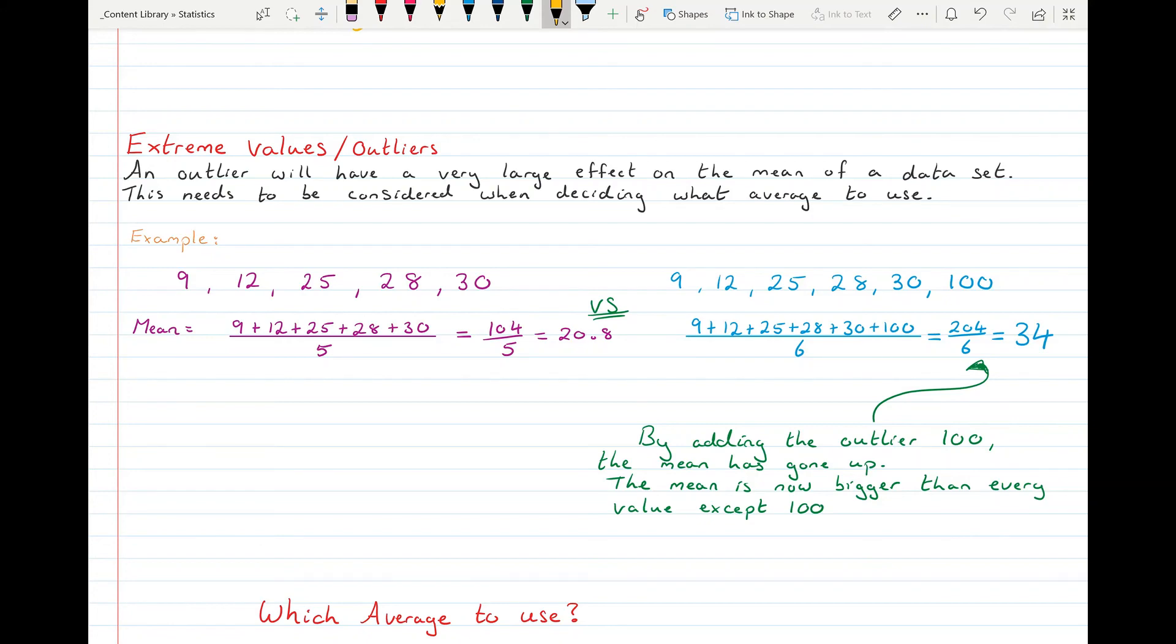And that's after changing the average from 20.8 up to 34, which is quite a big change in the average. And if you look at that, if 34 is the average of the blue numbers, that's actually larger than all of the numbers in the data set except 100. So that's not a very good average because there's only one figure greater than 34 and there's four of them less than 34. So outliers have a very big effect.